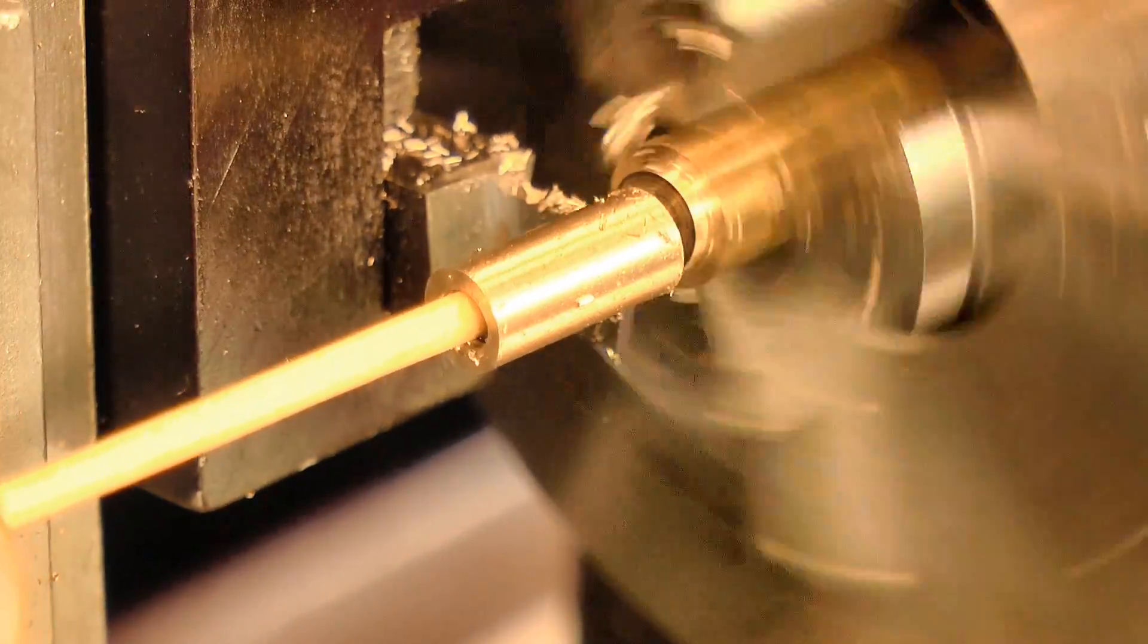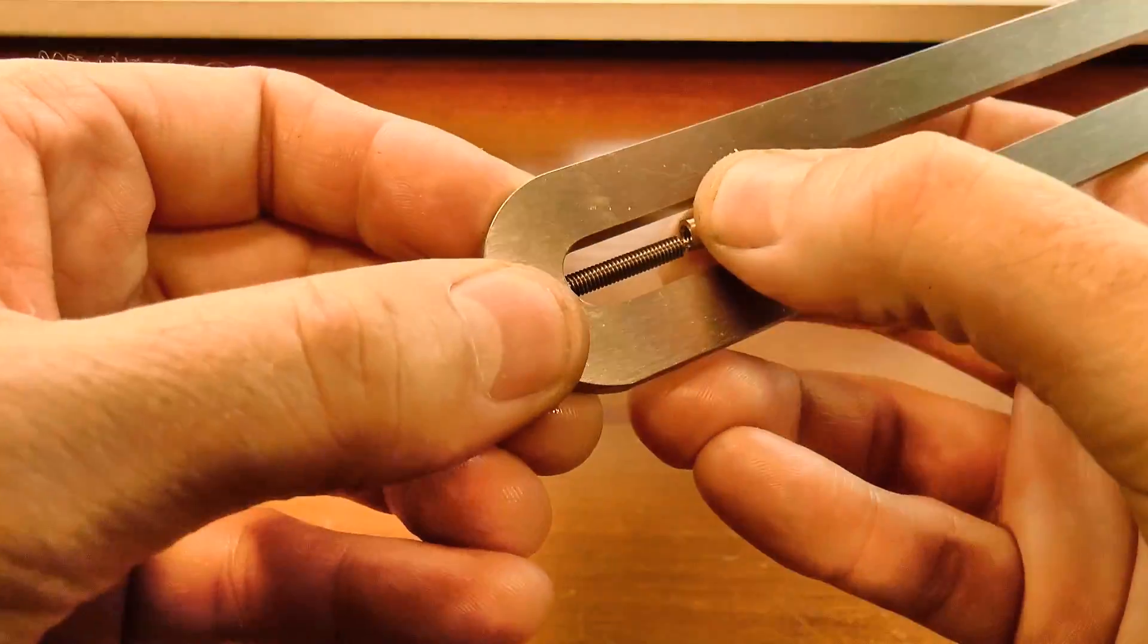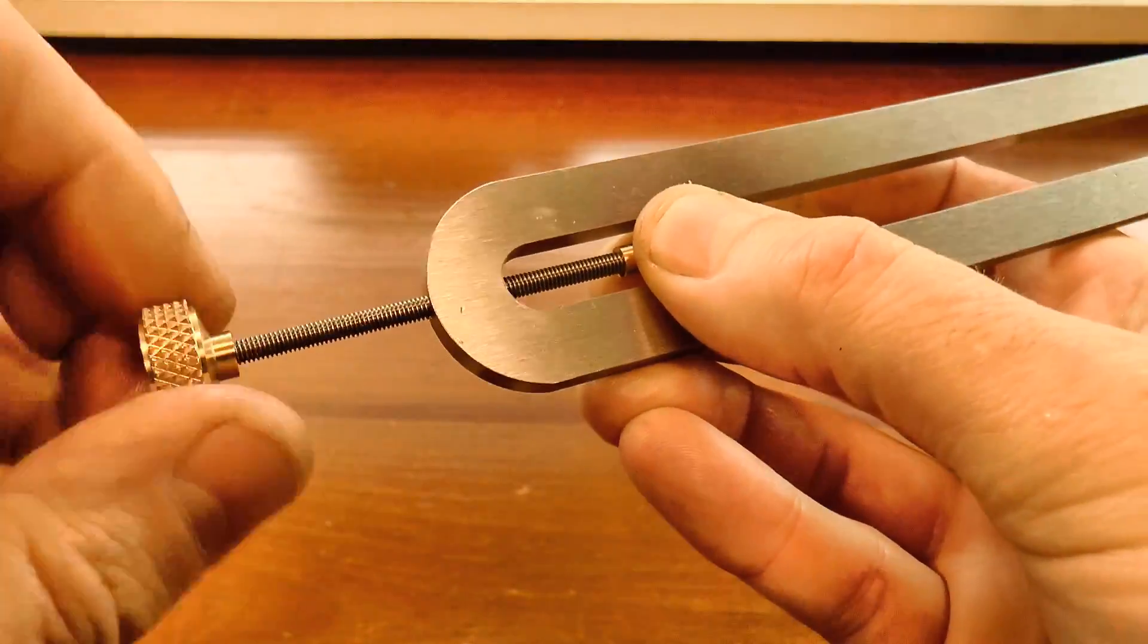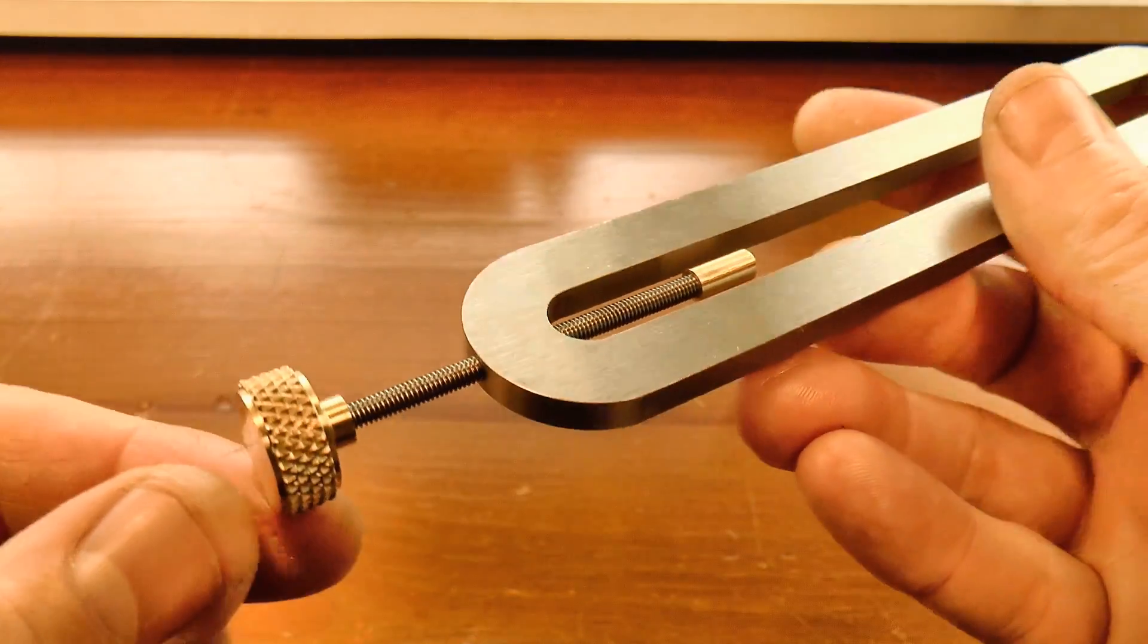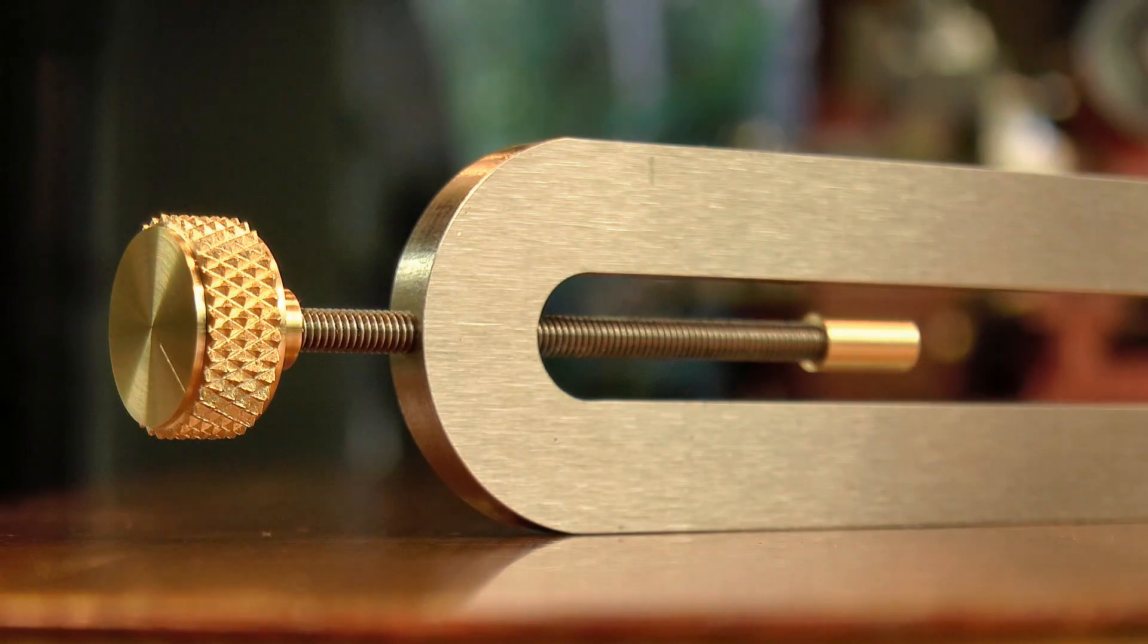And now we're ready for a little test fit. So that's the thumb screw complete. In the third and final part of this series, I'll finish off the tool by making the runners and bushings, and I'll also show a quick depthing. Thanks for watching, I'll see you later.